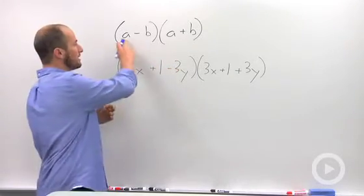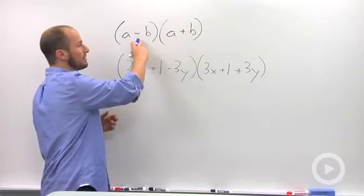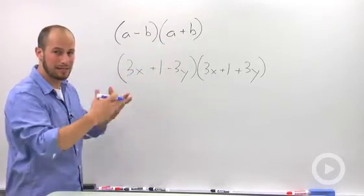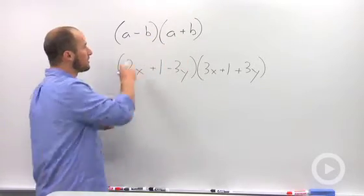we can FOIL this out. This a gets distributed to both items over here, this negative b gets distributed to both items, and we end up with another polynomial. So, in doing that,